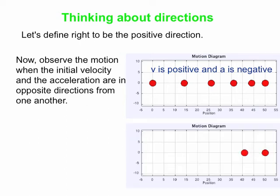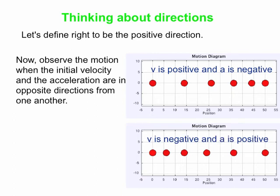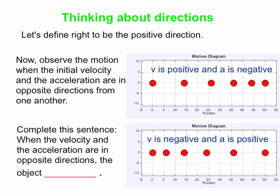Now look at the mirror image of that. The initial velocity is directed to the left, but the acceleration is directed to the right. Again, the distance between the points on the motion diagram is smaller and smaller as time goes by. In this case, V is negative to the left and A is positive to the right. When the velocity and acceleration are in opposite directions, the object slows down.